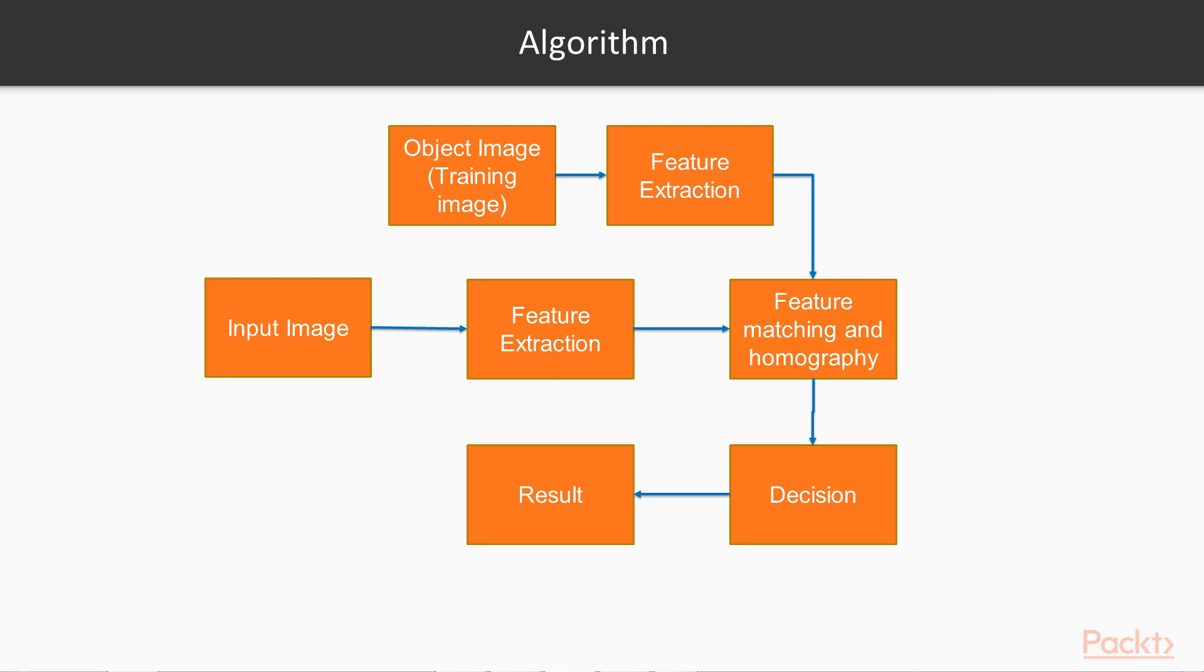If the object is present, we can also apply homographic transformations between the matched points to obtain the position and transformation of the detected object.